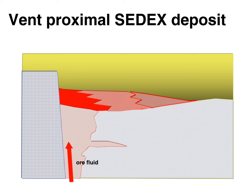The other type of SEDEX deposit is the vent proximal deposit. These fluids are more likely to be reducing, and while they may be saline, they don't have to be as saline as vent distal deposits, and they're going to be higher temperature. Their main method of ore precipitation is either cooling when the fluid hits the seafloor, or dilution by seawater. Because the fluid is hotter it mixes more readily with surrounding seawater, so ore is most concentrated near the fluid conduit with a possible stringer zone below, grading to lower quality away from the vent structure.